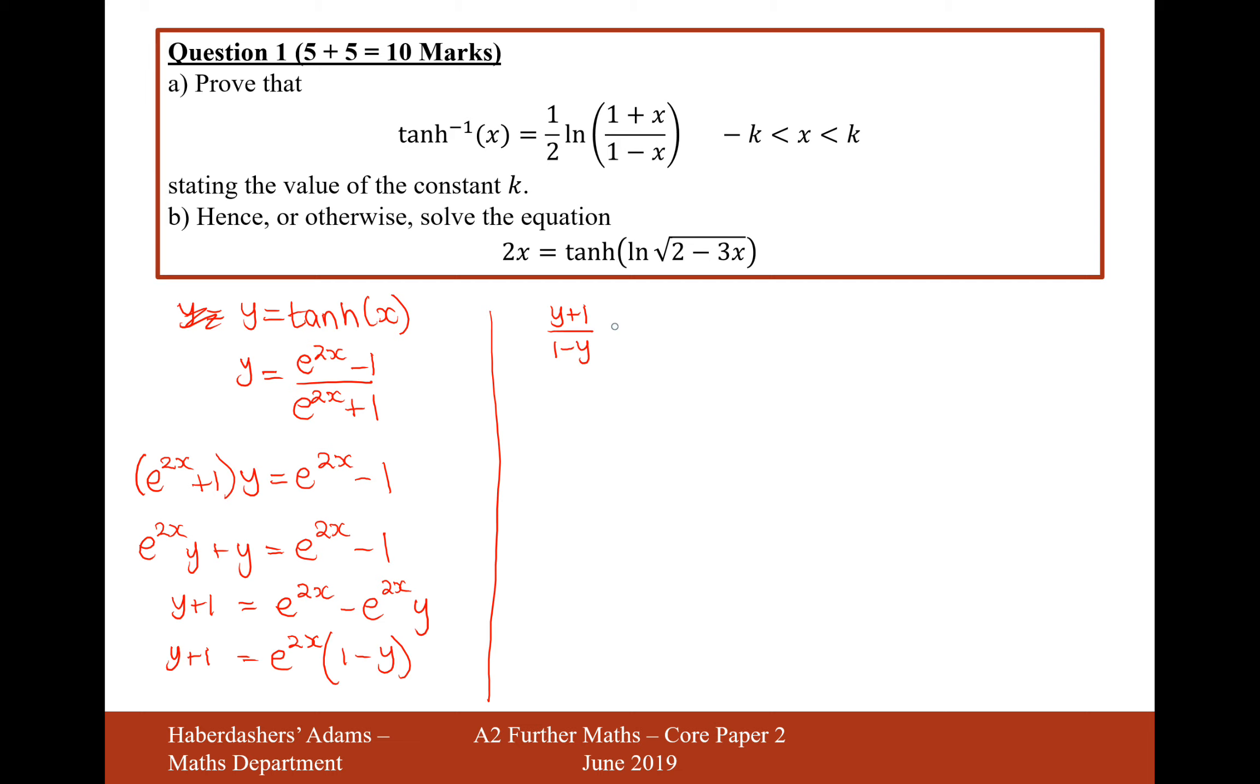So e to the 2x bracket 1 minus y is going to be y plus 1 and we'll divide by this 1 minus y on the other side. So y plus 1 over 1 minus y equals e to the 2x. We'll now get rid of the e, so we'll ln both sides.